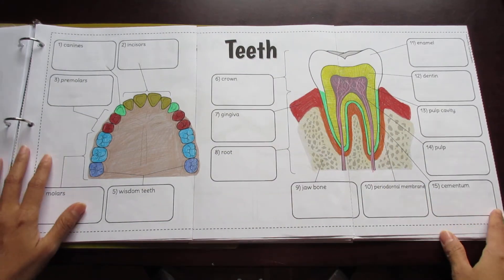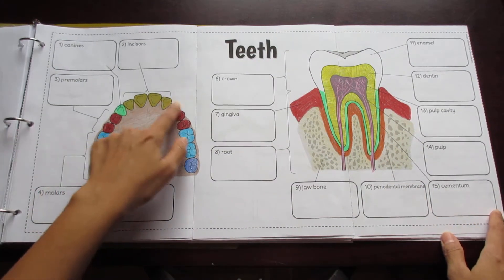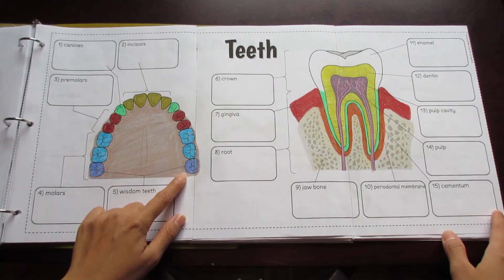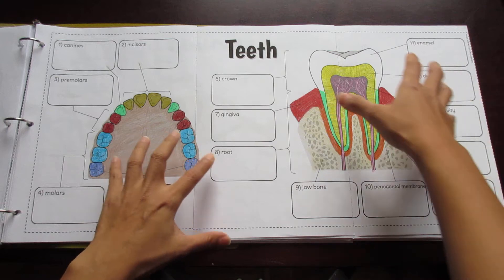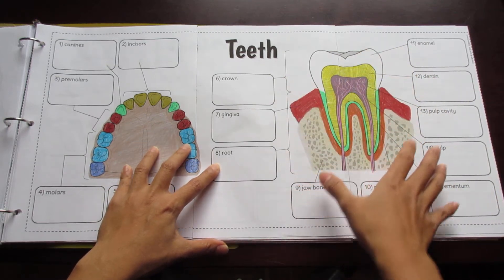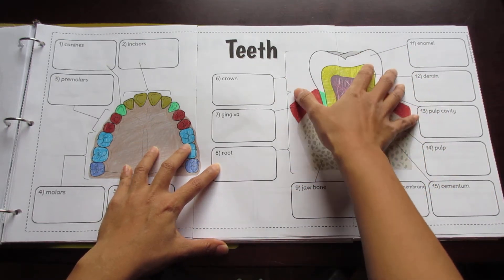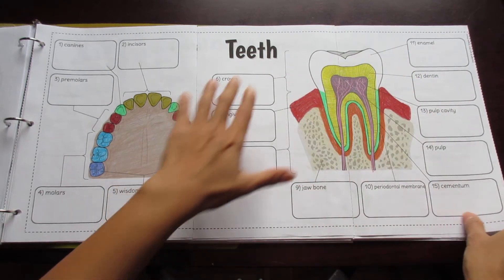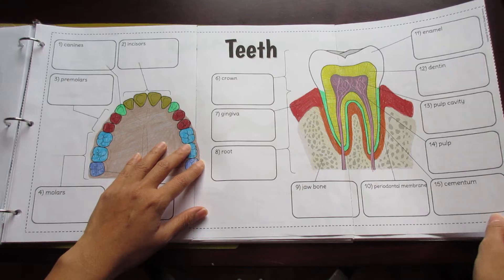This one is the teeth. It shows all the different teeth types and then a larger structure of just the tooth itself with a cross-section.